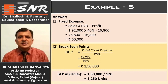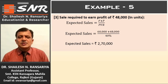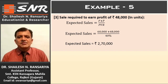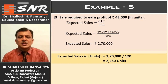Next, sales required to earn a profit of ₹48,000, also in units. The formula is: Expected Sales = (F + P) / PVR. Fixed expenses ₹60,000 + profit ₹48,000, divided by PVR 40%, gives expected sales of ₹2,70,000. Dividing by the selling price of ₹120: expected sales = 2,70,000 / 120 = 2,250 units.